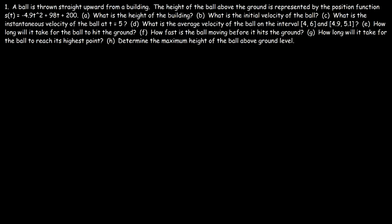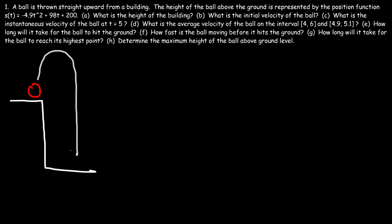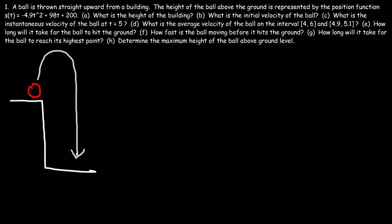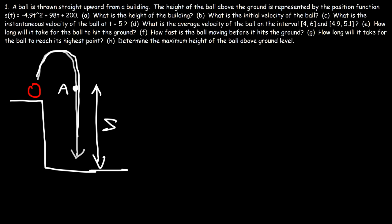A ball is thrown straight upward from a building. Let's draw a picture. This is like a calculus slash projectile motion type problem. The ball is going to go up and then down. In reality, it goes straight up and then straight down — it doesn't move to the right. We're given the position function that describes the height of this ball above ground level. S will be the difference between ground level and the point of interest, depending on what T is.